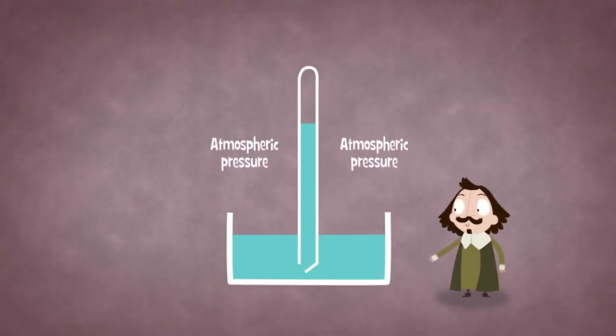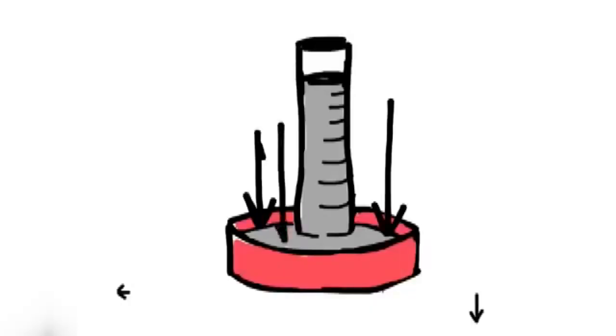At sea level, the atmosphere will push down on the mercury, making it rise up in the tube to a height of about 30 inches. The higher the pressure, the higher the mercury will climb in the tube.